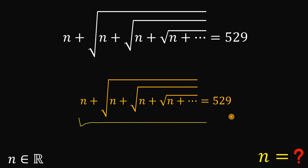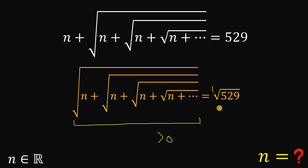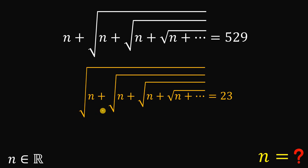What we're going to do is take the square root on both sides. Since n is a real number, the left hand side must be greater than zero. So we want the positive value: square root of 529. We can do that in our head — square root of 529 is just 23. So the value of square root of n plus square root of n plus square root of n until infinity is just 23.